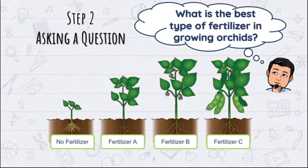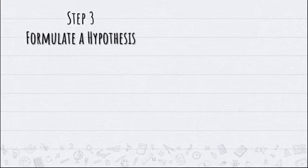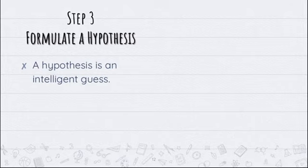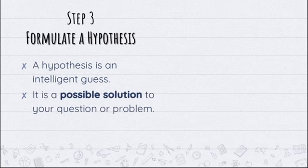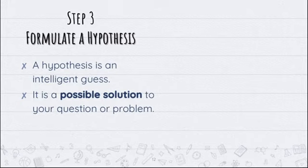When we say testable, we can conduct an experiment out of this question. We need to conduct an experiment. In that case, our third step is to formulate a hypothesis. A hypothesis is an intelligent guess. It is a statement which contains the possible solution to your problem, but it is not yet the final answer with further evidence. We need to prove the hypothesis whether it is correct or not. In order to be guided with our experiment, we need to formulate a hypothesis first before proceeding to experimentation.